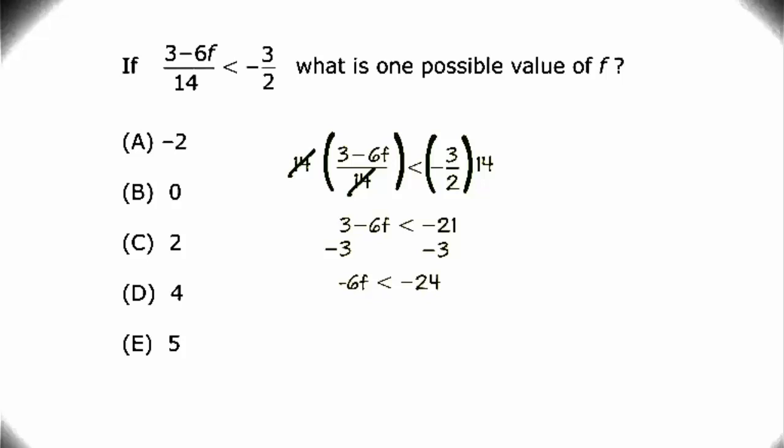The last step to isolating our f, though, is going to be division by a negative number. We need to divide both sides by negative 6. Remember what we have to do to our sign. What we get is f on the left side and negative 24 divided by negative 6 on the right side, which is really just 4. But because we divided by a negative number across the inequality, we need to flip it.